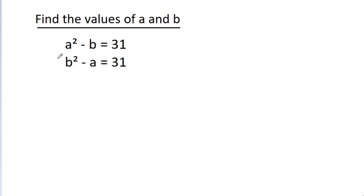In this video, we have been given that a squared minus b is equal to 31 and b squared minus a is equal to 31. We have to find the values of a and b.